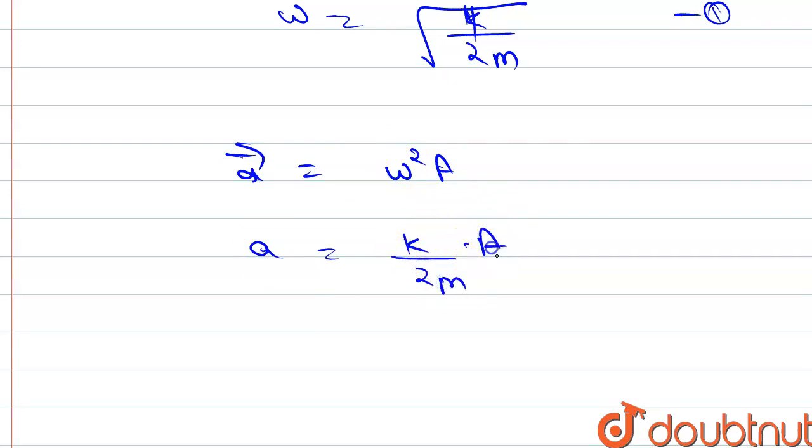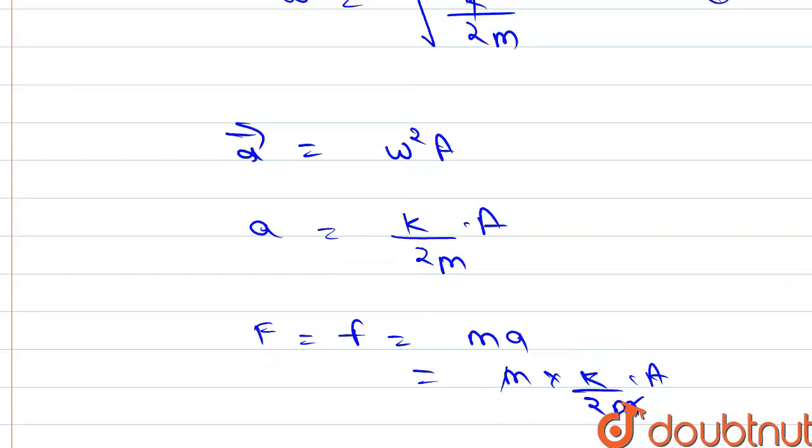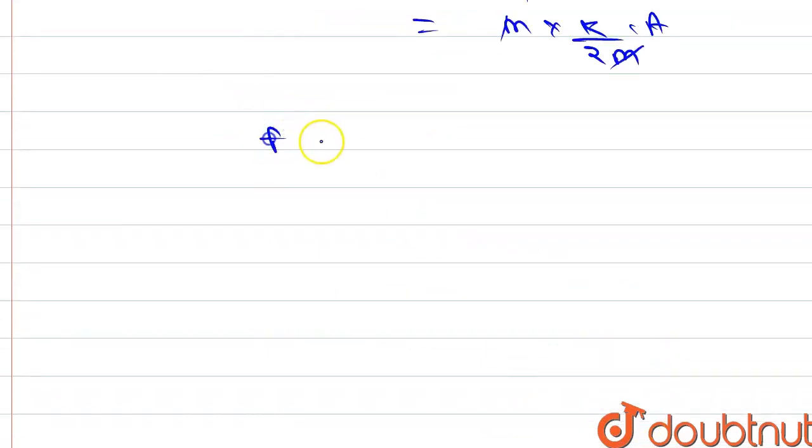Friction force f = ma. So f = m × ka/(2m) = ka/2. Therefore, our frictional force is ka/2. This is the maximum frictional force between the blocks.